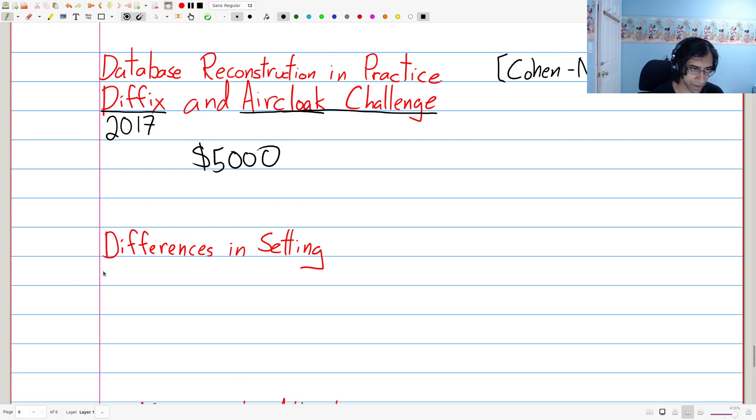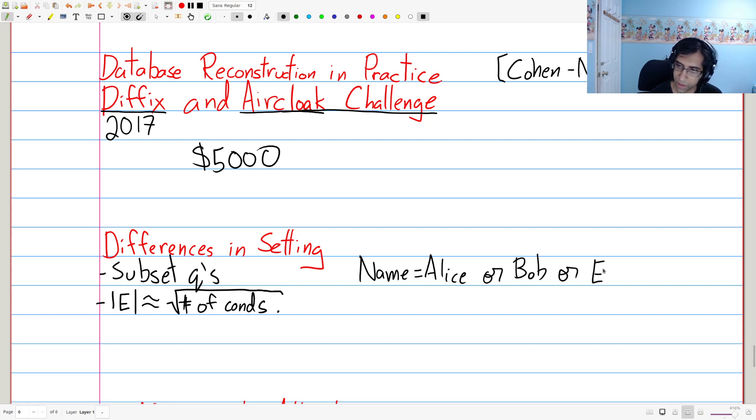So the similarity, I guess, still, we have subset or count queries. This is unchanged. But the main difference is the fact that the magnitude of noise, so the size of E, is proportional to the square root of the number of conditions. And what do I mean by that? Let's take a step way back. Remember, we had something at the beginning of this lecture where we had, say, name equals Alice, or Bob, or Eve. Well, this would be one, two, three conditions.